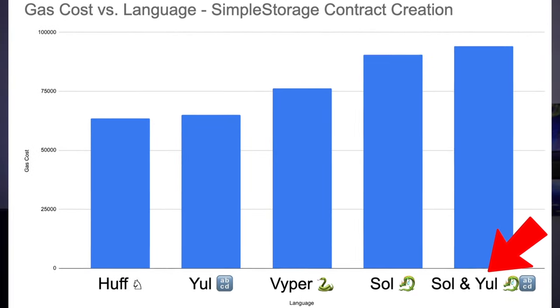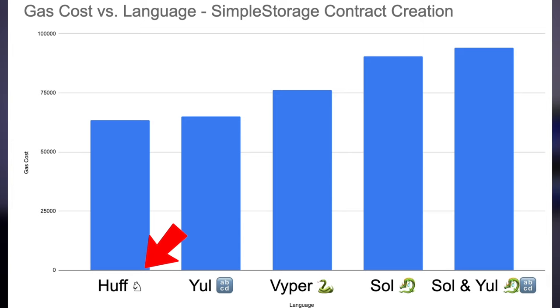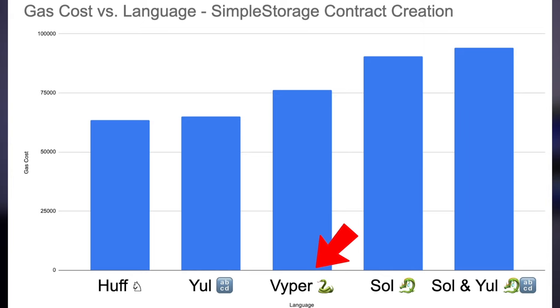You'll notice this fifth column called Sol Yule. Solidity can be combined with the Yule programming language — one of these lower level languages — to make your Solidity faster or more performant. Lower level languages like Huff and Yule are more gas efficient than Viper and Solidity, which makes sense because they're lower level. Viper seems to be a little bit more efficient than Solidity, and our Sol Yule seems to be the worst by far in this small contract — but we'll see why that normally isn't the case.